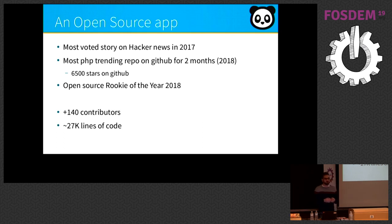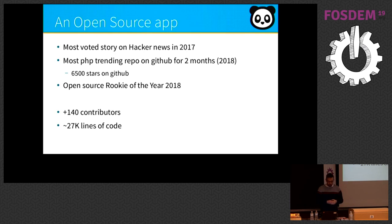The idea came from Regis and was the most upvoted story on Hacker News in 2017. In 2018, it was for two months the most starred PHP repo on GitHub. Today we have 6,600 stars on GitHub. It was one of the open source rookies of the year in 2018, and we have more than 140 contributors.